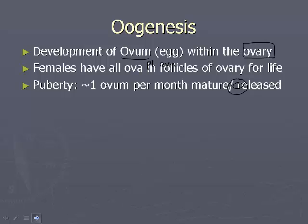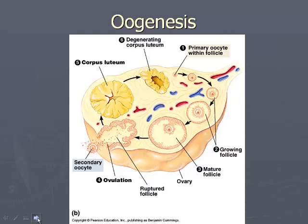Oogenesis is the process — this is a big overview. It starts out as a primary oocyte. 'Oocyte' just means an immature egg. As you can see, around it is the developing follicle. They're both maturing together, so the egg is maturing and the follicle is maturing around it.